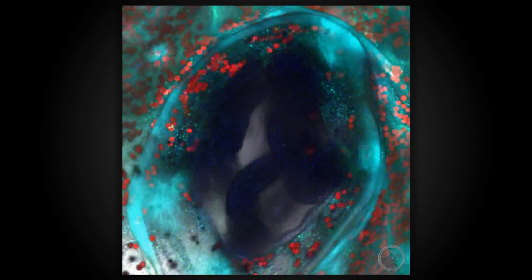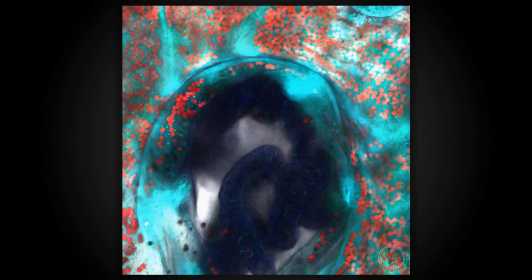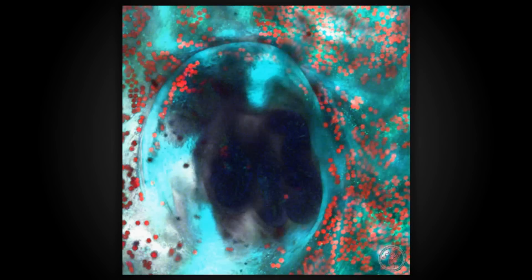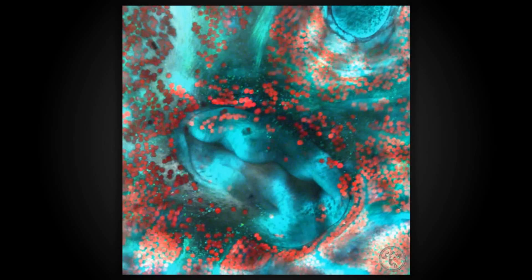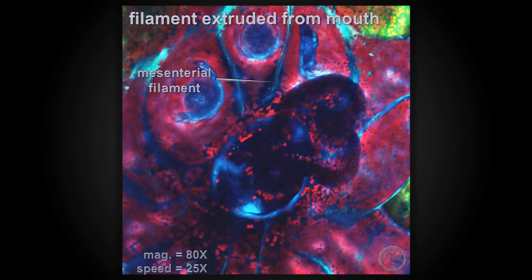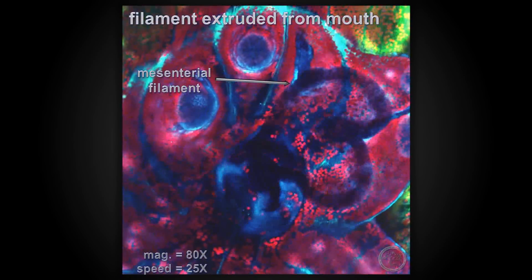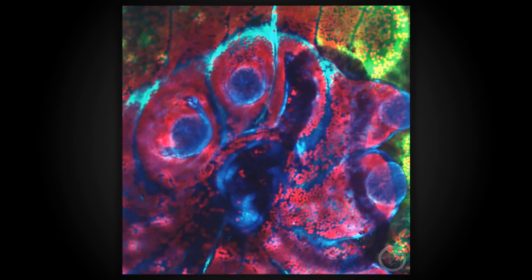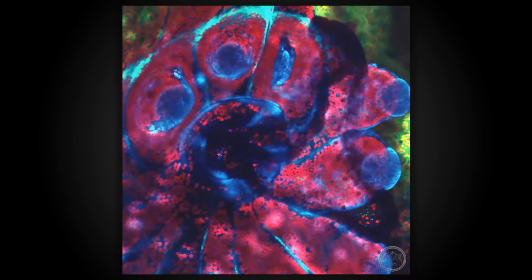As docile as coral may appear, they are actually very dynamic. Aside from moving tentacles, they can extend mesomaterial filaments from their mouths. In this image, combining fluorescence and transmitted light, you can see the mesomaterial filaments moving inside the mouth of this polyp. Corals use the extrusion of mesomaterial filaments to battle with neighboring coral, to catch prey, or in this case, to expel symbiodinium.